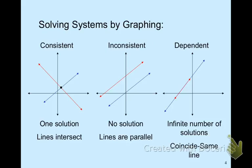Looking at graphing and what the graphs would look like: when there is one solution, we see where two lines intersect, and we can identify the solution as the ordered pair at the point of intersection. In the second case, there is no solution — the lines are parallel, and by definition parallel lines will never intersect. In the third situation, there are infinitely many solutions because the lines are the same — the red and blue lines coincide, and every point is a solution.